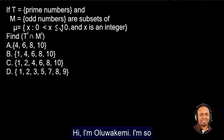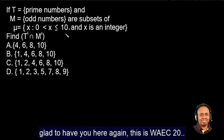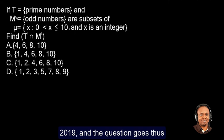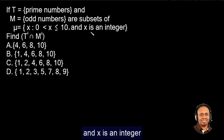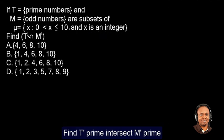Hi, I'm Oluwakemi. I'm so glad to have you here again. This is YEC 2019 and the question goes thus: If T equals prime numbers and M equals odd numbers, a subset of the universal set with this given range of numbers and x is an integer, find T prime intersect M prime.